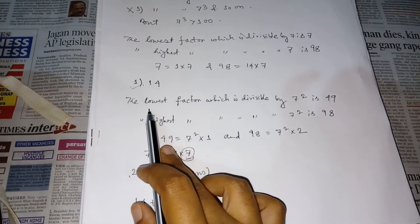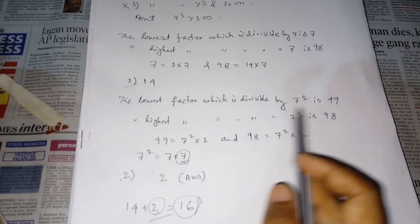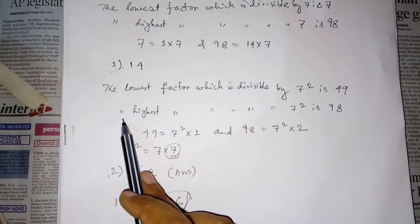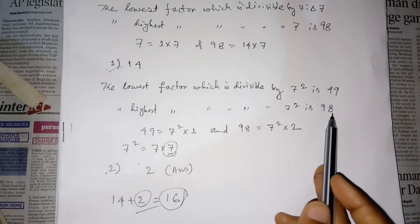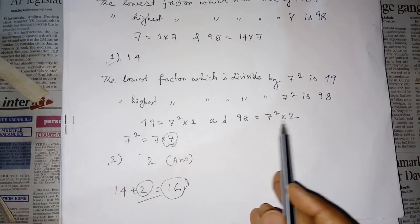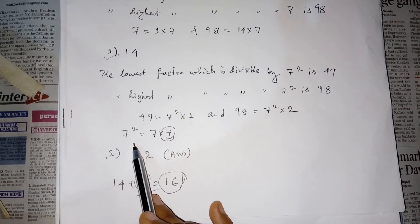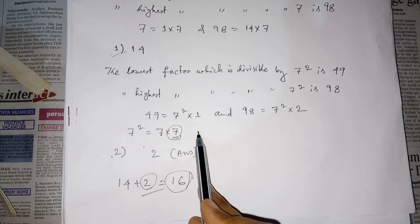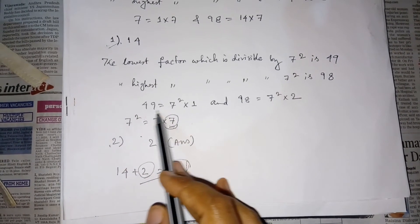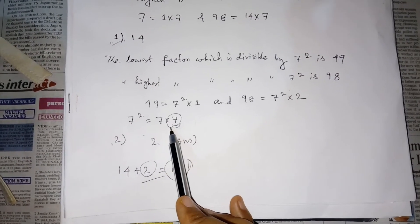Similarly, the lowest number which is divisible by seven square is 49, and the highest number which is divisible by seven square is 98. We can write 49 as 7² × 1 and 98 as 7² × 2. One important thing is that 7² equals 7 × 7, so any number divisible by 7² contains 7 as a factor two times.